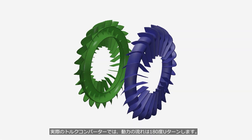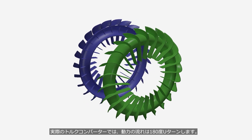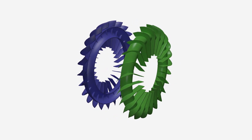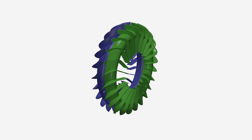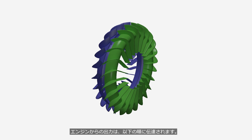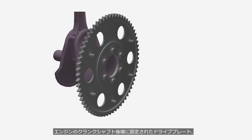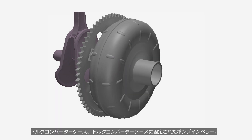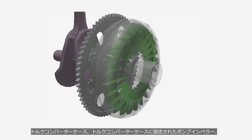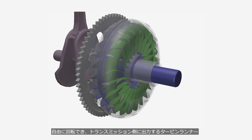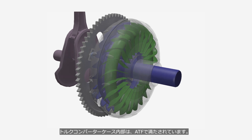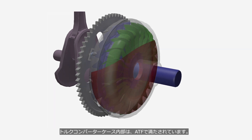In an actual torque converter, the flow of power makes a 180-degree turn. The power is transmitted in the following order: from the engine, to a drive plate fixed to the rear end of the crankshaft, to the torque converter case, to a pump impeller fixed to the torque converter case, and finally to the turbine runner that can rotate freely, which then outputs power to the transmission side. The inside of the torque converter case is filled with ATF.